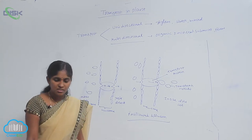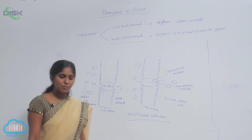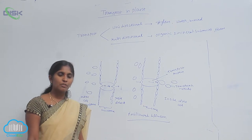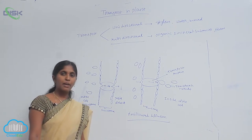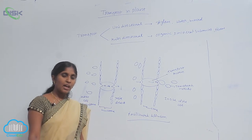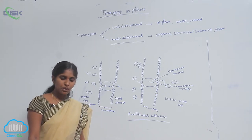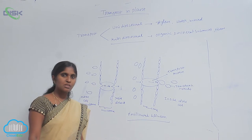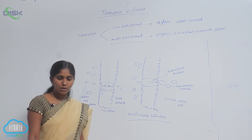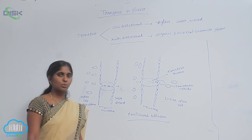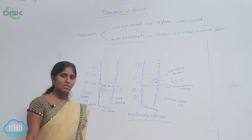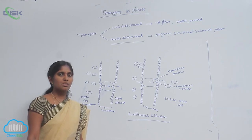Porins are proteins that form pores on the outer membrane of plastids, mitochondria, and some bacteria. They allow molecules up to the size of some small proteins to pass through, meaning small-sized proteins can pass through the porins.